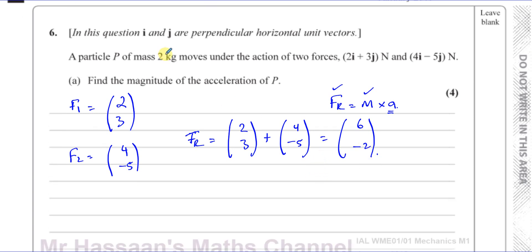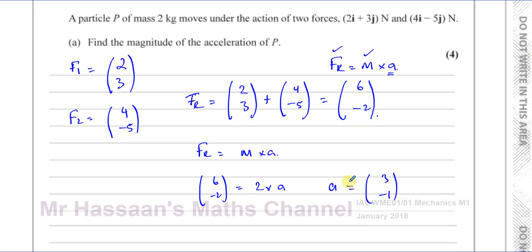We know the mass is 2 kilograms, so 6, negative 2 is equal to 2 times acceleration. So the acceleration is going to be 3, minus 1 as a vector. They want us to find the magnitude of the acceleration, which is going to be the square root of 3 squared plus minus 1 squared. That's going to be 9 plus 1, which is 10. So the magnitude of the acceleration is root 10.